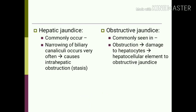In hepatic jaundice the cause is commonly infection or toxin, i.e., viral hepatitis, but there is also narrowing of the biliary canaliculi, resulting in features of obstruction as well. In obstructive jaundice the main cause is obstruction — commonly gallstones, though carcinoma of the pancreas or surrounding pathology obstructing the bile duct are other causes. Because of biliary stasis behind the obstruction, hepatocytes are also damaged, so hepatocellular elements are present in obstructive jaundice too.